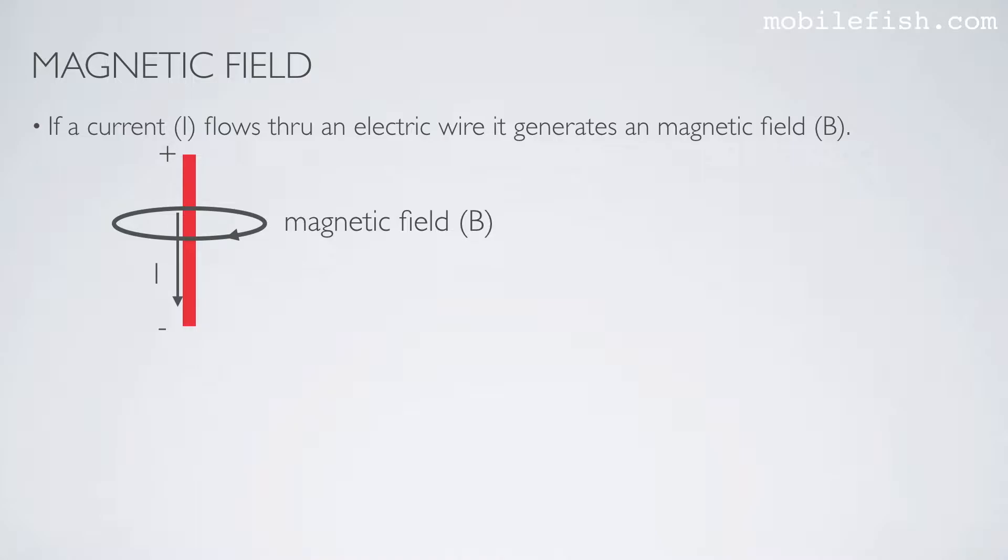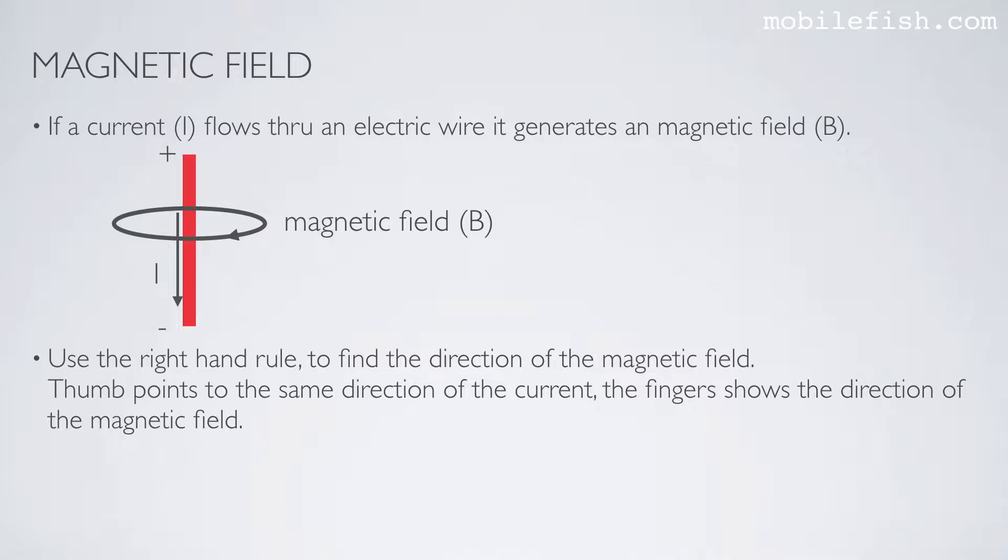If a current flows through an electric wire, it generates a magnetic field. Use the right-hand rule to find the direction of the magnetic field. Thumb points to the same direction of the current. The finger shows the direction of the magnetic field.